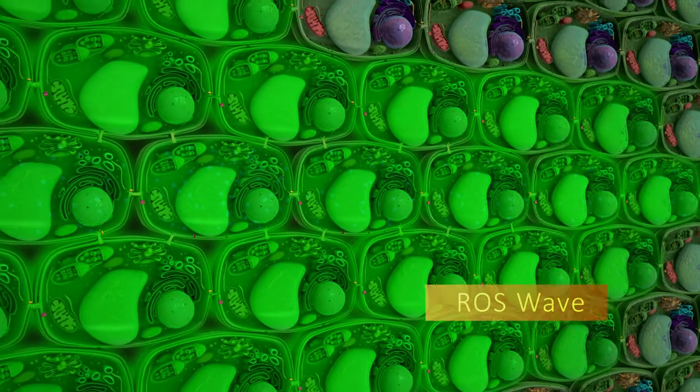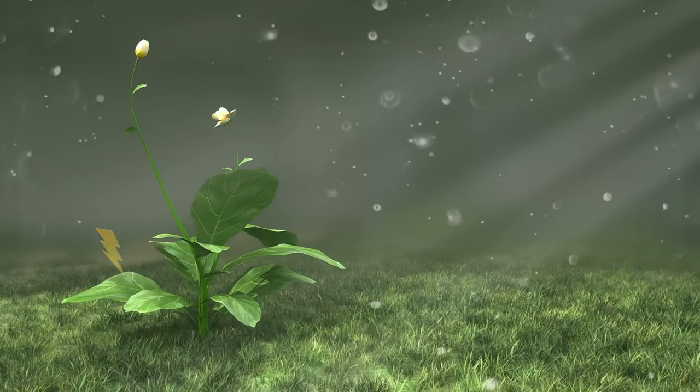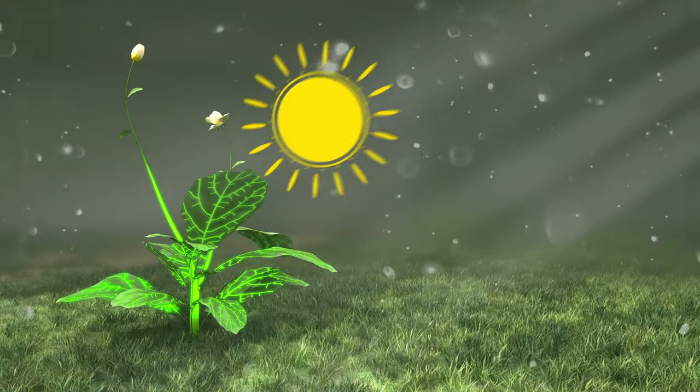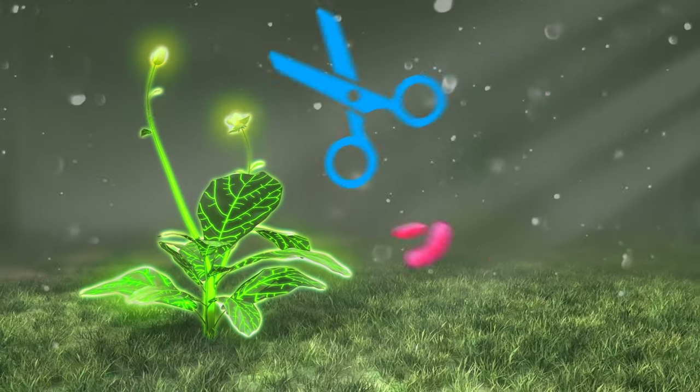This process is called the ROS wave and it is essential for systemic signaling. As a result, all plant tissues, even ones that did not initially sense the stress, become tolerant.